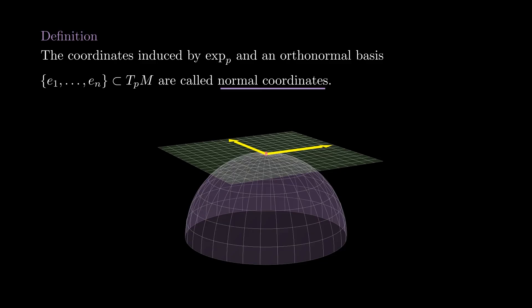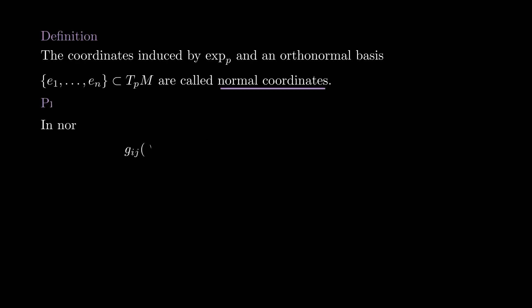Now we are going to introduce a very convenient set of coordinates. Pick an orthonormal basis e1, e2, and so on in TpM, and use it to put local coordinates around p via the exponential map. These coordinates are called normal coordinates around p. We finish this lesson by proving some properties of this chart. At zero, the metric coefficients are the Kronecker delta, the Christoffel symbols are zero, and the derivatives of the metric coefficients are also zero.